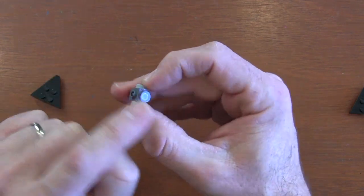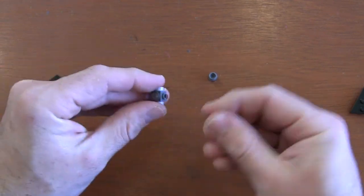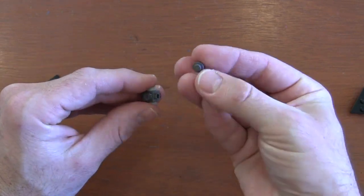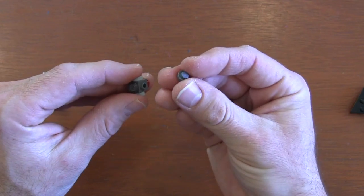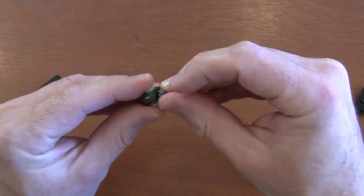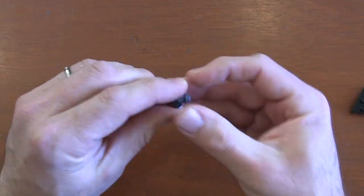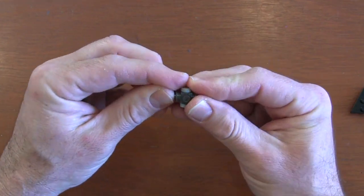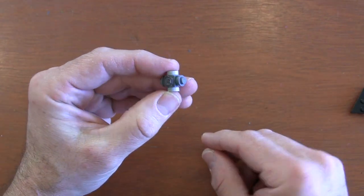Now, we still have those side studs. For the side studs, we're going to get some 1x1 round plates. This time, it does have a stud because we have to attach our wings. We're going to put those on both sides of our TIE fighter here, our Sith TIE fighter. Once those are on, we can now attach our wings.